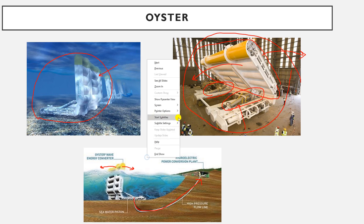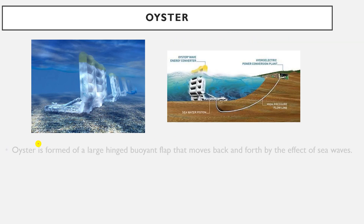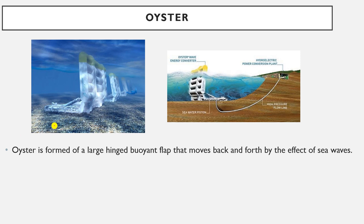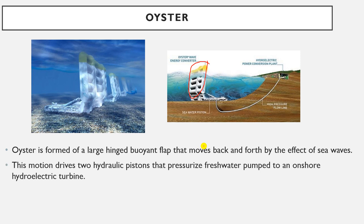The Oyster is formed of a large hinged flap — this part that moves back and forth by the effect of sea waves. This motion drives the two hydraulic pistons; one is here and the other one is on the other side.